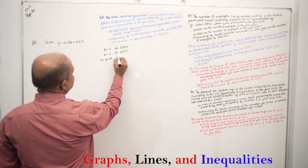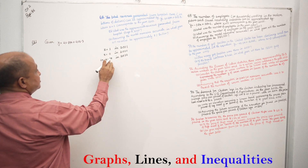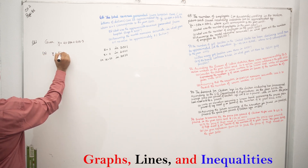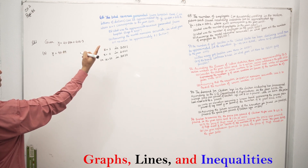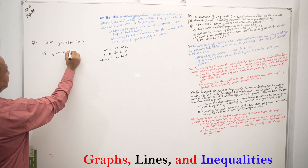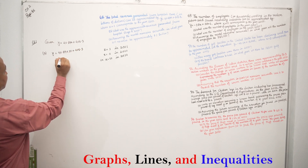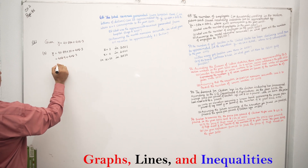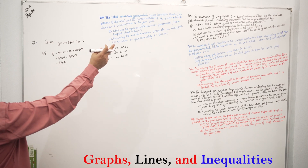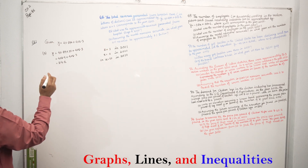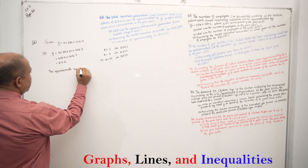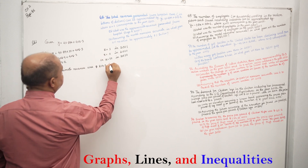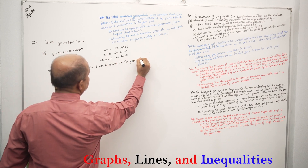Problem 68: the total revenue generated from hospital care in billions of dollars. Requirement A: Y equals 40.89X plus 405.3, where X equals 10 in 2010. Y equals 40.89 multiplied by 10 plus 405.3, which equals 408.9 plus 405.3. The approximate revenue was 814.2 billion dollars in the year 2010.